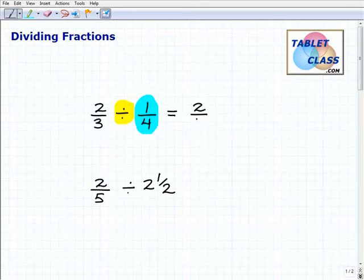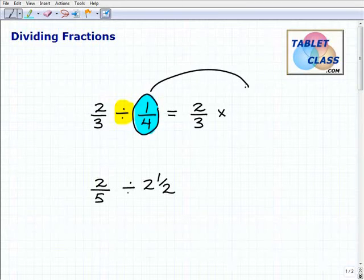So I'm going to go 2 thirds. Now, instead of having a division problem, I'm going to turn it into a multiplication problem. But to do that, I need to take this fraction and flip it upside down. Okay, so instead of 1 over 4, it's going to be 4 over 1. So that's it. You just basically take division problems in fractions, turn them into multiplication problems.